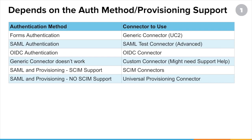If you want to also do provisioning on top of single sign-on to an application we don't have a pre-built connector for, you have a couple of options. We have several SCIM connectors that support both SAML and provisioning if the application supports SCIM, which is basically a standard for creating and updating users. If the application doesn't support SCIM, we now have what's called our Universal Provisioning Connector — talk to your account manager to get connected.